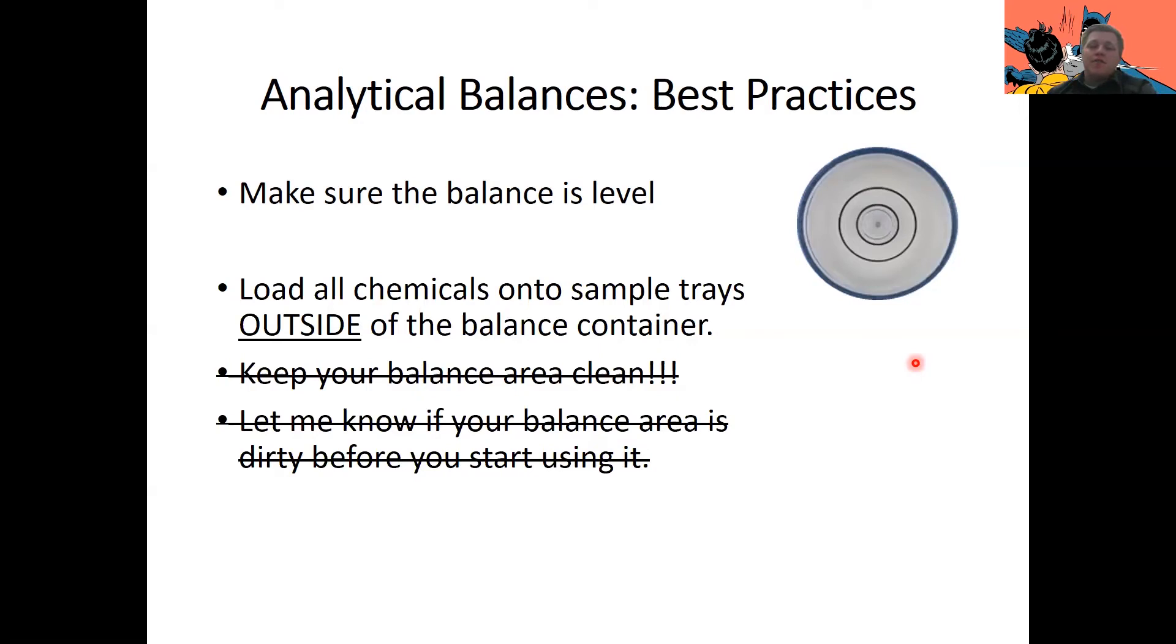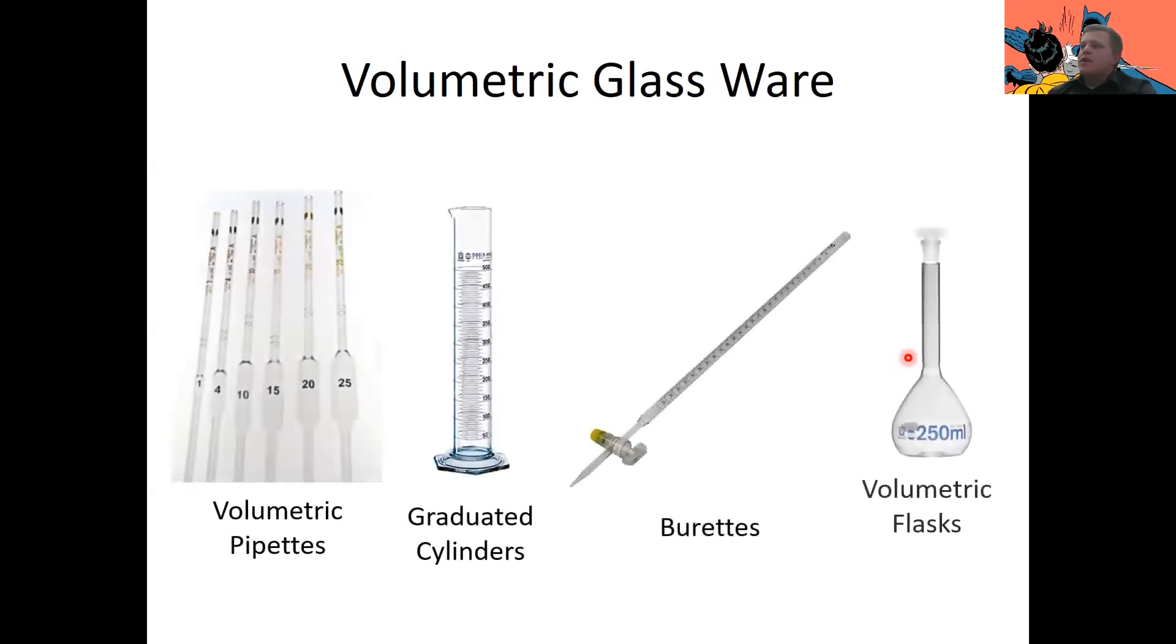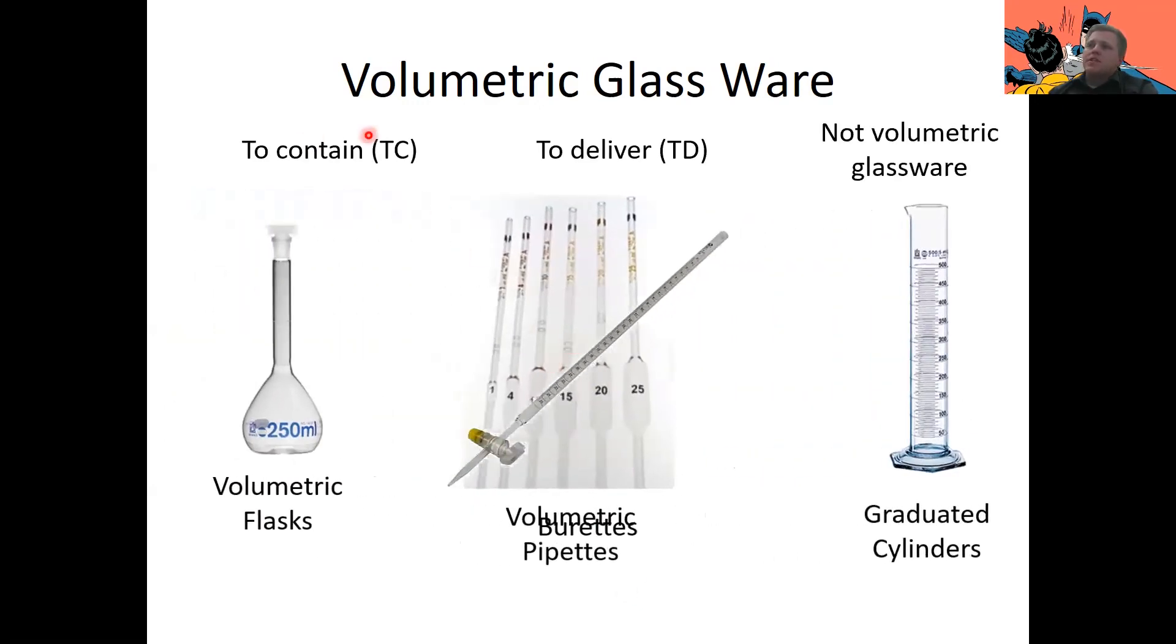Now we're going to shift to volumetric glassware. So what I have here are four types of generally used volumetric glassware. We have volumetric pipettes, graduated cylinder, a burette, and volumetric flasks. So we talked about a couple of these last time and how to use them. We're going to get a little more detailed about how these all work. So first, these types of glassware can be sorted into three types of volumetric glassware. The first type is to contain. The second type is to deliver. And the last type is not volumetric glassware.